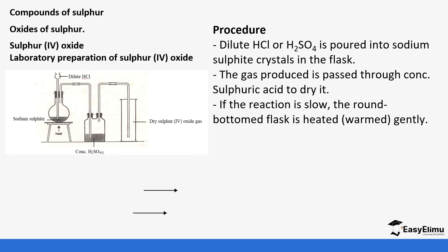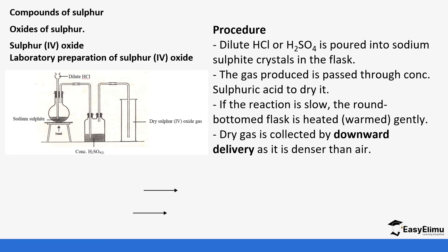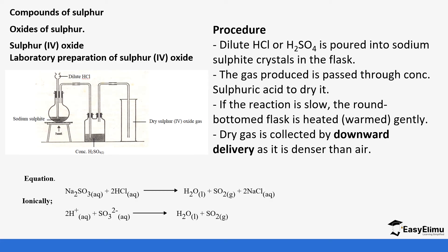If the reaction is very slow, that is the reason why we warm gently. The gas is collected by downward delivery because of its density relative to air. The equation is: sodium sulfite — note it's sulfite, not sulfate — plus hydrochloric acid forms sodium chloride, sulfur dioxide, and water. Looking at the ionic equation, hydrogen ions react with sulfite ions to form water and sulfur dioxide.